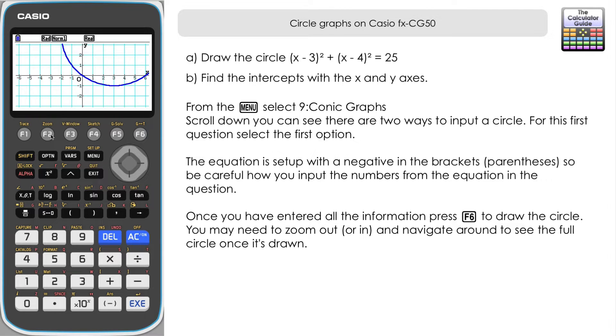So initially we can just see a section of this circle. I'm going to press F2 for zoom and then out, F4 for out, and then press execute. We've zoomed out a little bit and let's just scroll up. We can see the full circle presented there.